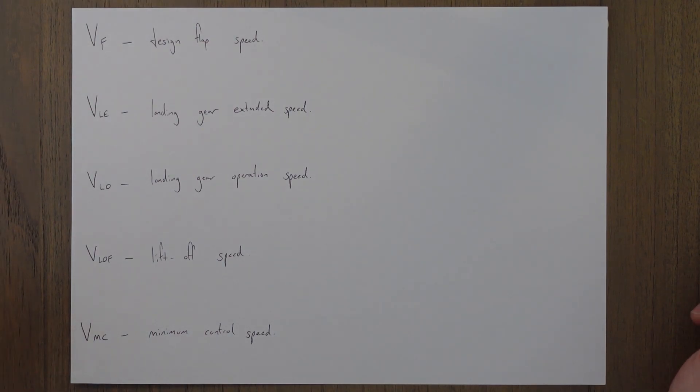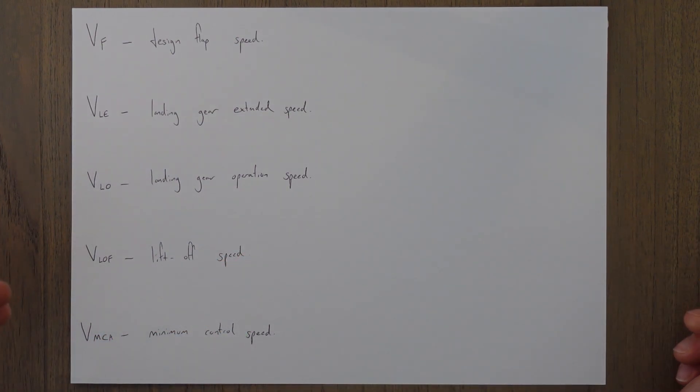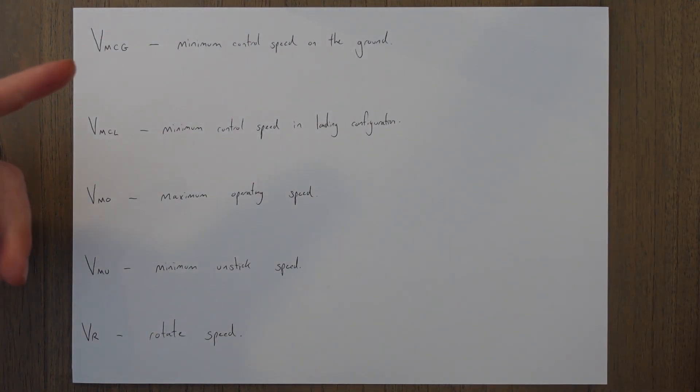VMC is the minimum control speed. This is the minimum control speed at which the aircraft is still controllable with the critical engine inoperative and a bank of no more than five degrees. This is sometimes also given a little A after it to designate that it's the minimum control speed in the air, but they're pretty much interchangeable, VMC and VMCA. The reason we sometimes give a VMCA is because we get a VMCG as well, just to differentiate the two.